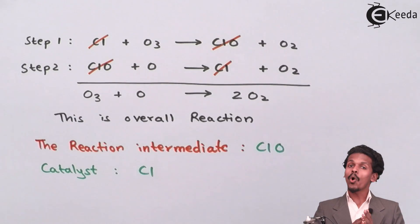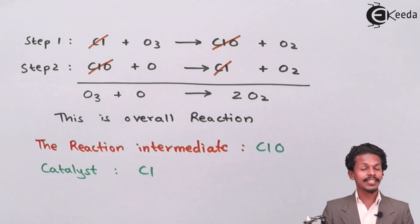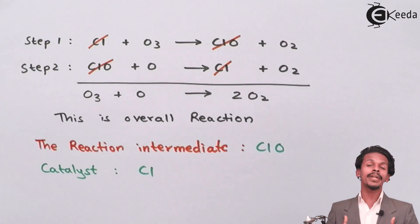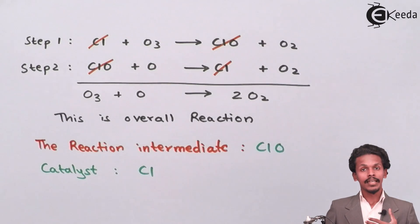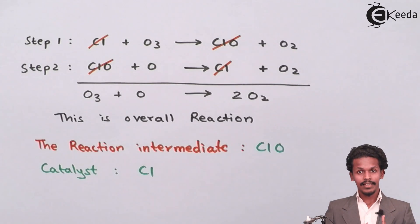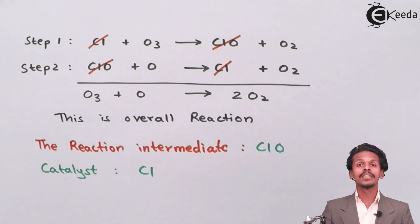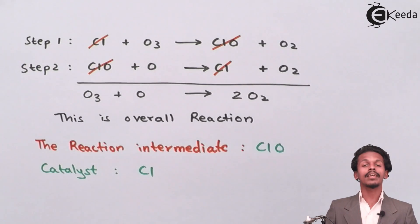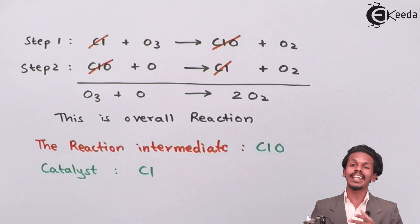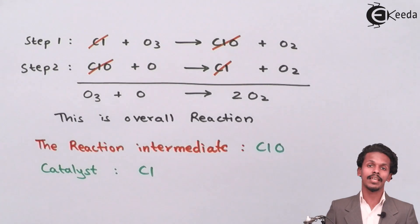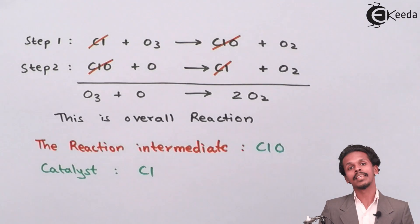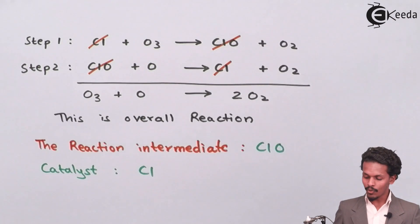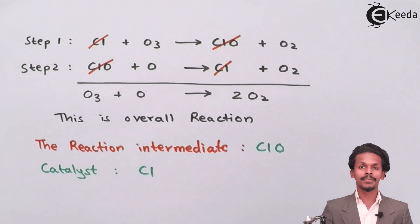So we now know the intermediates and the role of each species. To summarize: the role of a reaction intermediate is to continue the reaction by forming a product in a subsequent step, while the role of a catalyst is that it is consumed and then regenerated during the reaction. We have now obtained all three required answers.